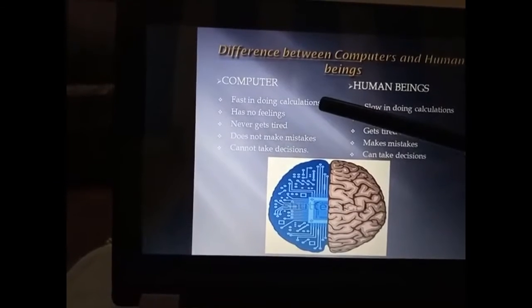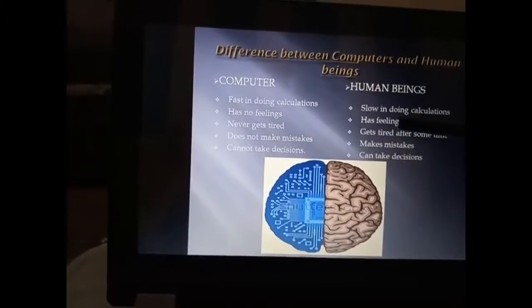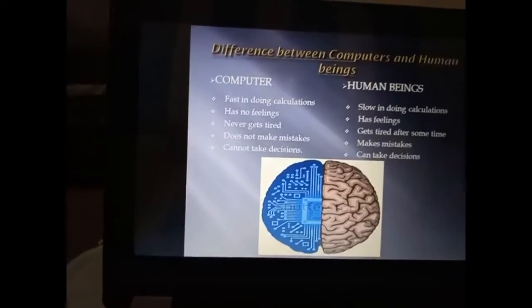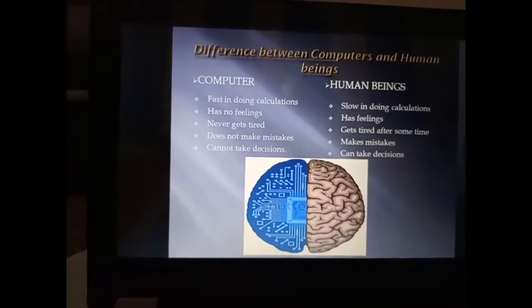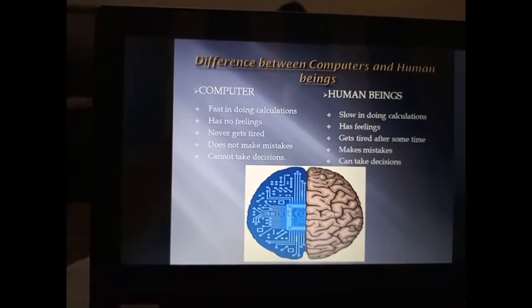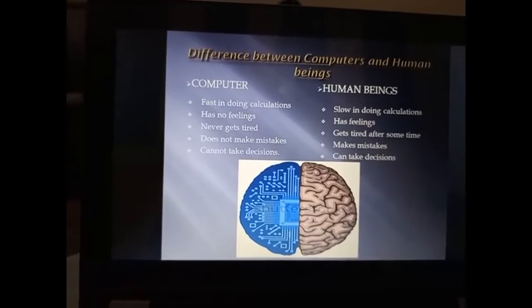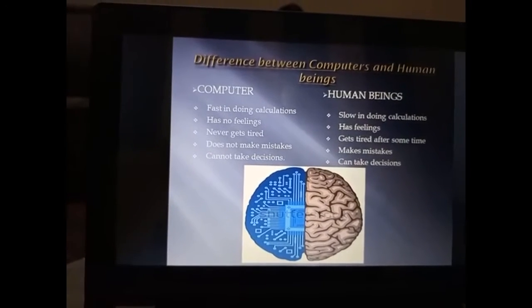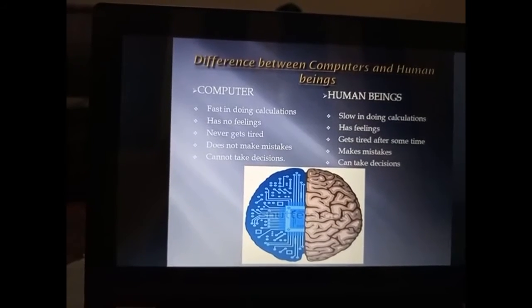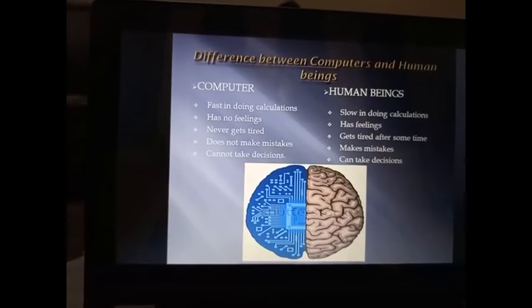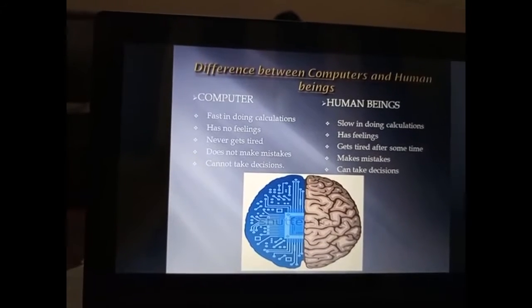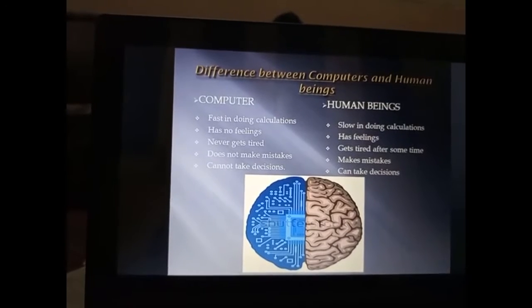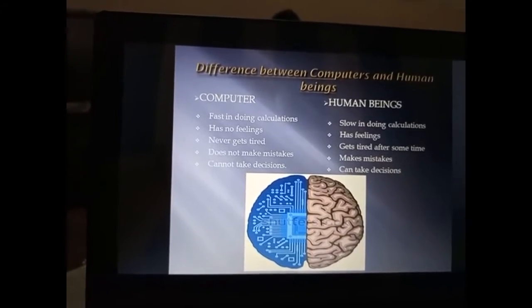The first point: a computer is fast at doing calculations, while a human being is slow at doing calculations. The computer is an electronic machine — because it is a machine, it is fast in calculations. But we humans are slow because we think and understand. For example, two plus two equals four: a computer gives the answer instantly, while we count and figure it out.